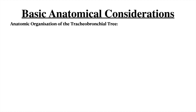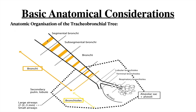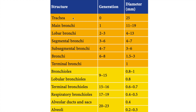Coming first to the basic anatomical considerations — the anatomical organization of the tracheobronchial tree. The tracheobronchial tree has 23 generations starting from the trachea and ending in the alveoli. The difference between a bronchus and a bronchiole is that bronchi have cartilages while bronchioles do not. There is also a differentiation between large airway and small airway — small airway is something less than two to three millimeters in internal diameter. We can see the various generations starting from the trachea with a diameter of 25, ending in alveoli.